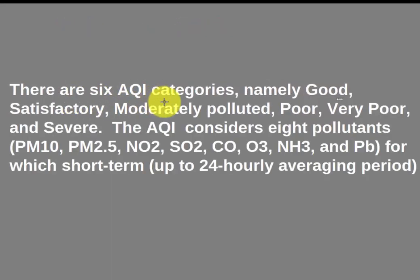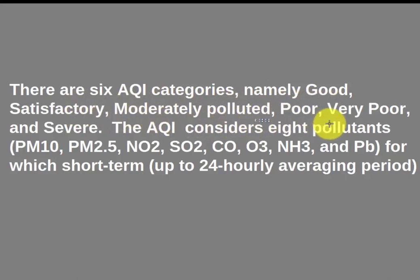There are six air quality index categories: good, satisfactory, moderately polluted, poor, very poor, and severe. Different colors are assigned for all these categories.